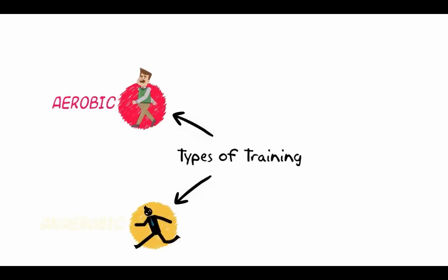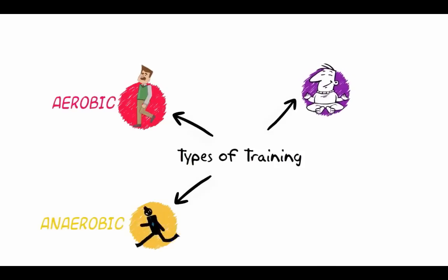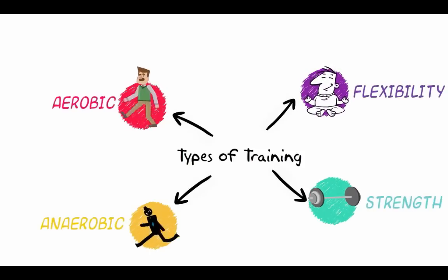For factors affecting performance, there are four different types of training that you need to learn. There's aerobic training, there's anaerobic training, there's flexibility training, and then there's strength training. Each training type has its own training method.